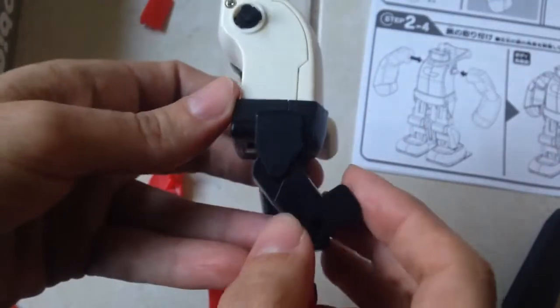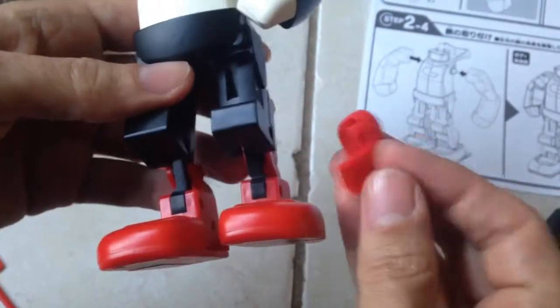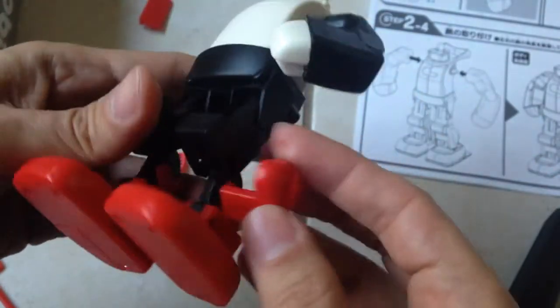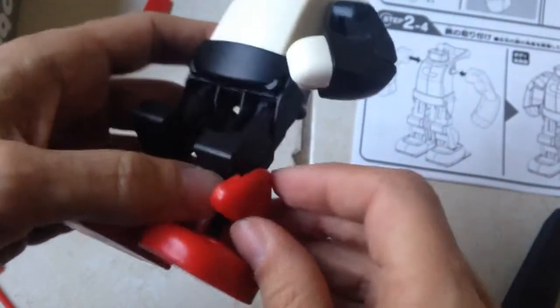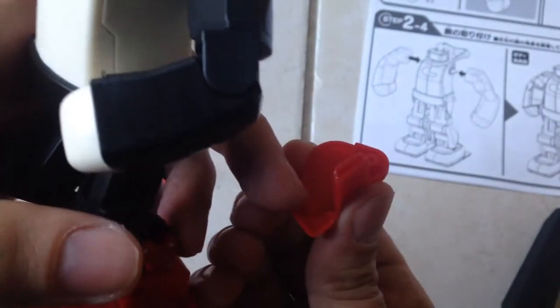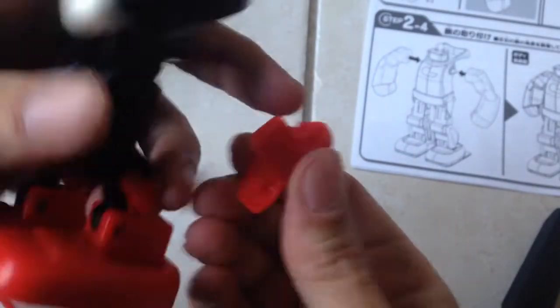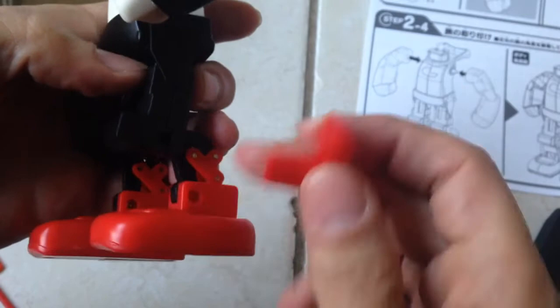As you can see, these pieces are all matching up together the way they should. The next part is to attach this part here. You'll see there are little round bits on there that go into these holes here.